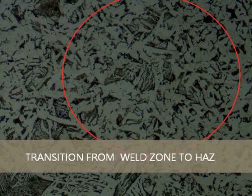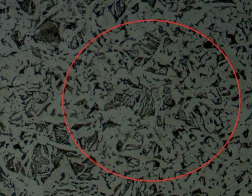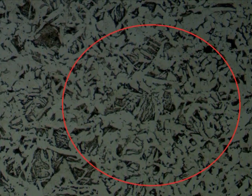In this picture, we can clearly see that there is transition from the weld zone to the heat affected zone. That is the weld zone having the larger grains to the heat affected zone having the smaller grain size.